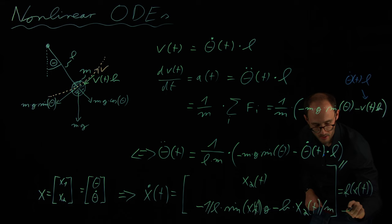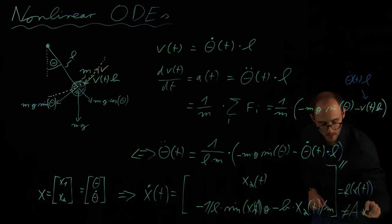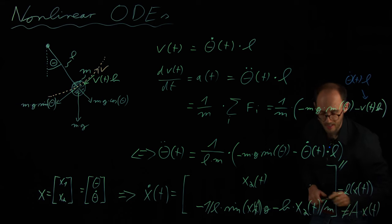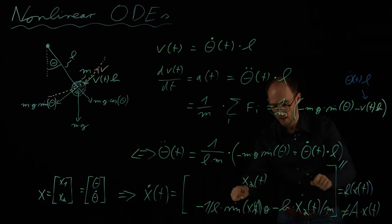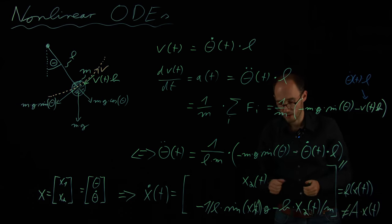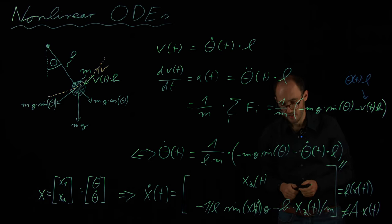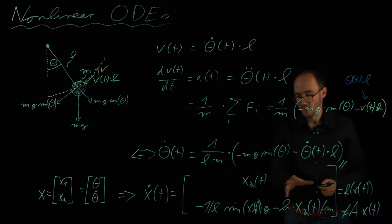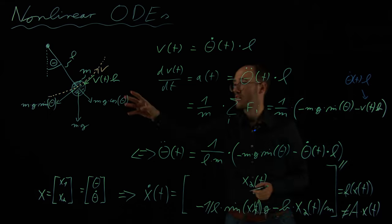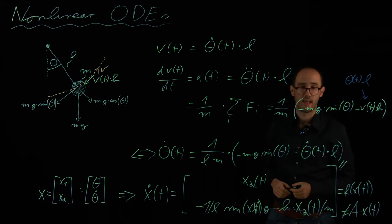And for obvious reasons, we can see that this is not identical to A times x of t, because we can see here on the right hand side we have different nonlinear expressions, especially here the sin x1 of t. So basically, this is a nonlinear ODE which comes from a very simple mathematical model.